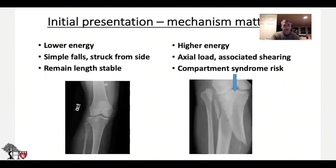The initial presentation — the mechanism obviously matters. The lower energy fractures are usually a simple fall, or patients struck from the side where they have a simple, usually lateral plateau fracture, and tend to be length stable. Versus the higher energy injury, which is often more of an axial load and can have different patterns of shearing. There's often compartment syndrome associated with these.